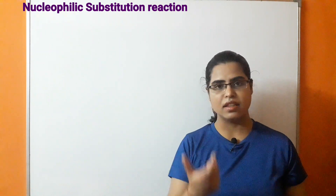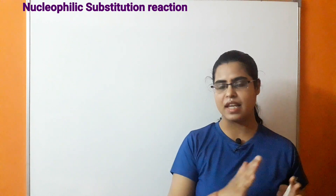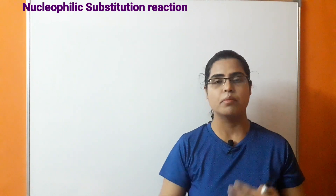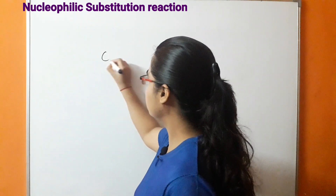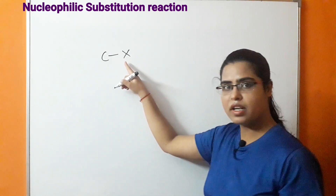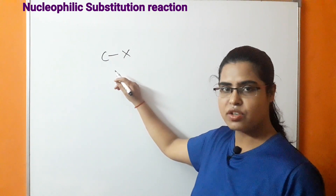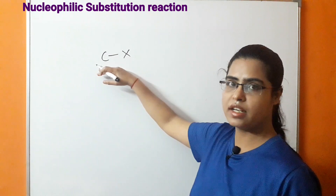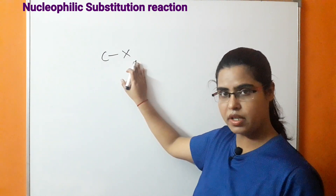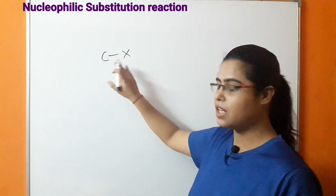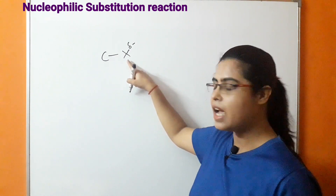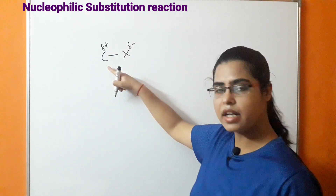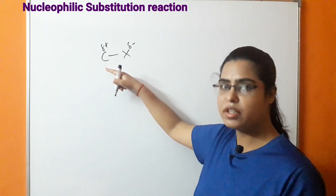As you can understand from the term, in nucleophilic substitution reaction, one nucleophile will displace another nucleophile during the reaction — because of that, this reaction is known as nucleophilic substitution reaction. In the case of haloalkanes, the carbon-halogen bond is partially ionic because of the electronegativity difference between carbon and halogen. Halogen is more electronegative than carbon, so there is a partial negative charge on the halogen and a partial positive charge on the carbon — meaning carbon is electron deficient.